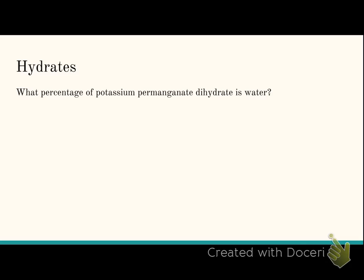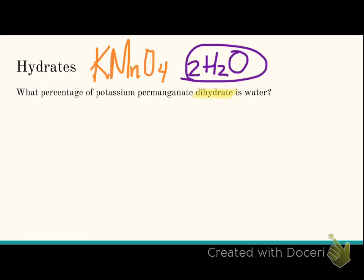You may see some things with hydrates. What percentage of potassium permanganate dihydrate comes from water? What you have to remember in this is this is your water. Dihydrate means 2H2O. So we're not just finding the percentage of one element, we're finding the percentage of water, which means we have to account for two H2Os. We've got to find our molar mass here. Remember potassium permanganate is KMnO4. I'm going to pause this just a second. You find your molar mass and then start it back up once you've found that.